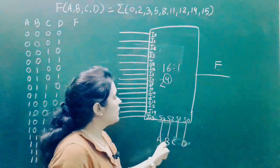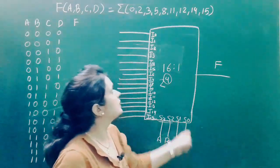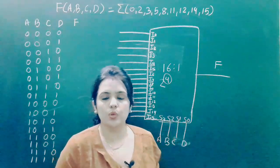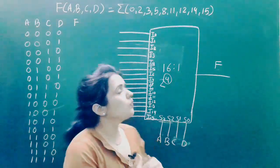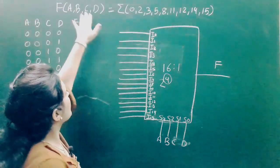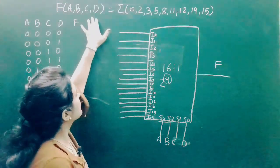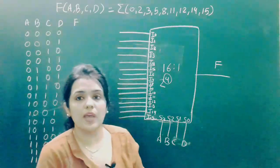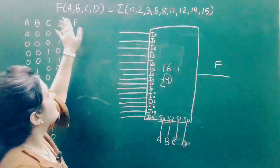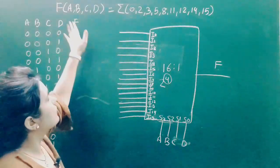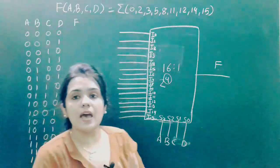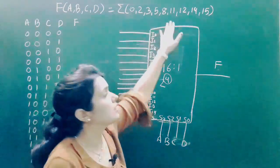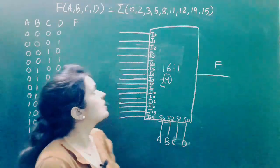When A, B, C, D is 0, 0, 0, 1, data from I1 will be selected for output, and so on. The Boolean function is a 4-variable function with variables A, B, C, D and output F. F is 1 — that is, output is high — at the specified min terms.